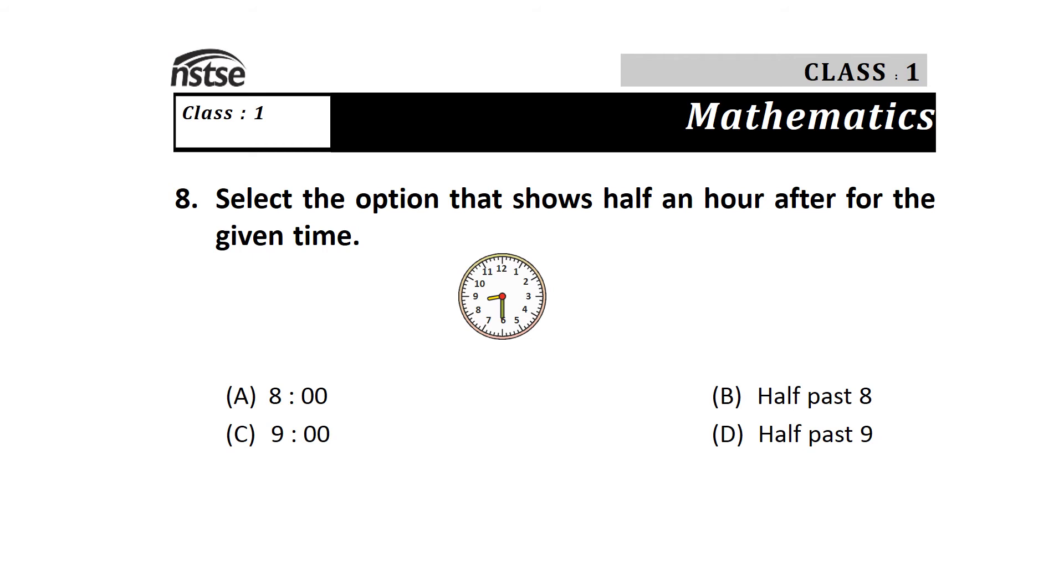Question 8: Select the option that shows half an hour after the given time. Options are A) 8, B) half past 8, C) 9, and D) half past 9. The time shown is 8:30 now in the watch, so after half an hour it will be 9. The answer is C) 9.